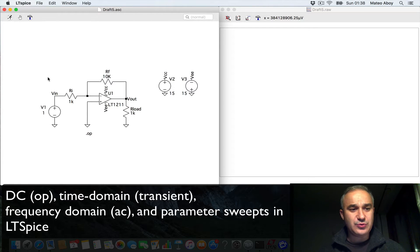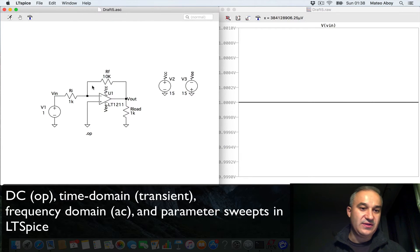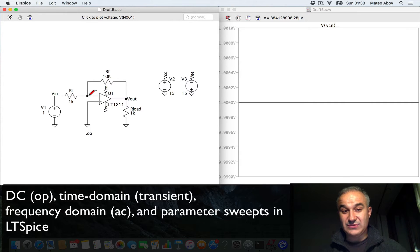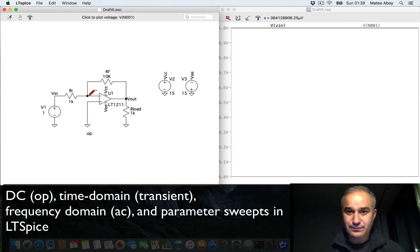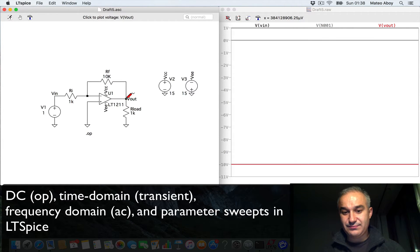When we do an operating point analysis, we can use the probe to look at voltage levels and current levels. The voltage at the input is 1V. The voltage at the inverted input, we expect that this is going to be, since we have negative feedback, like the one at the non-inverting input, so it's going to be very close to zero. There you go. The voltage at the output should be minus 10. We got it there.